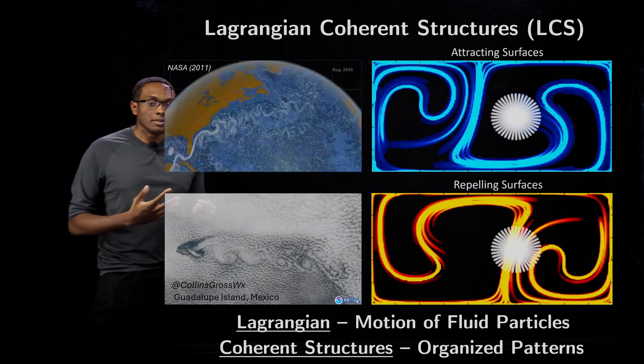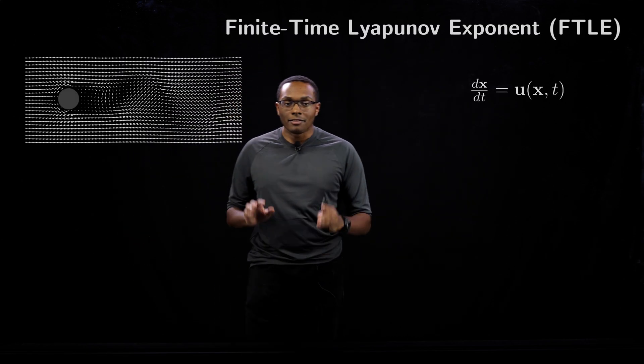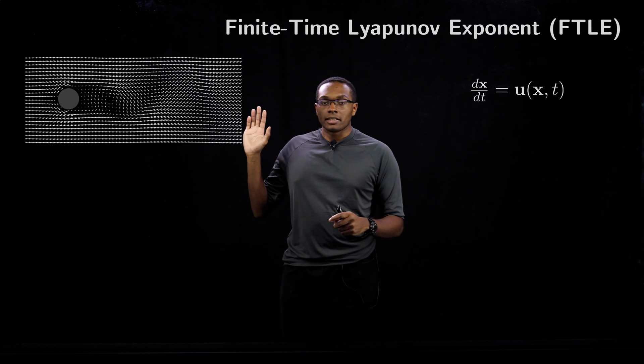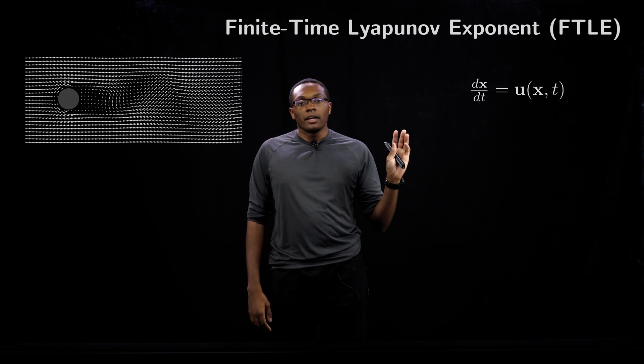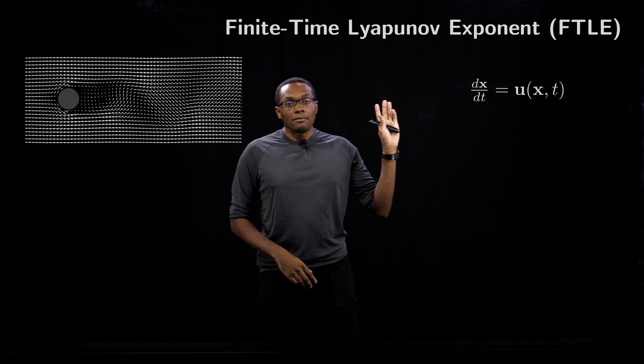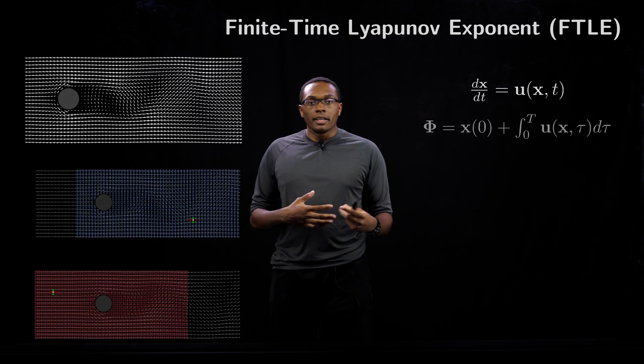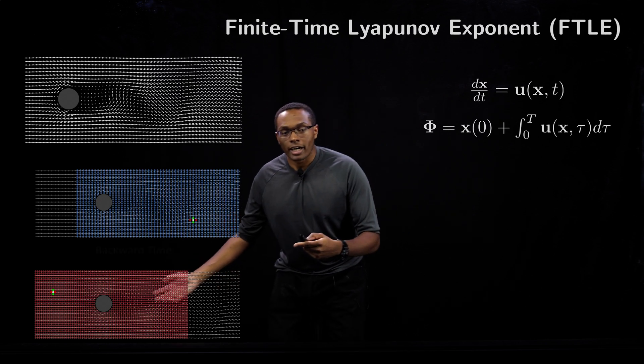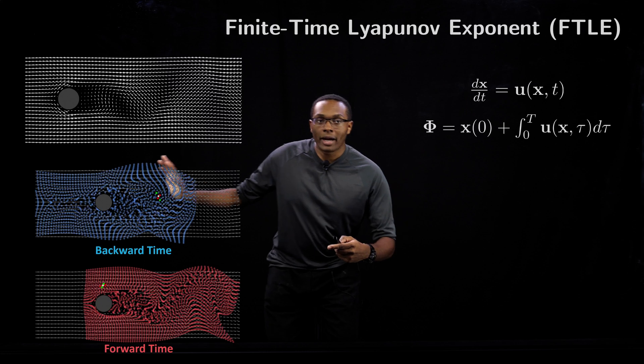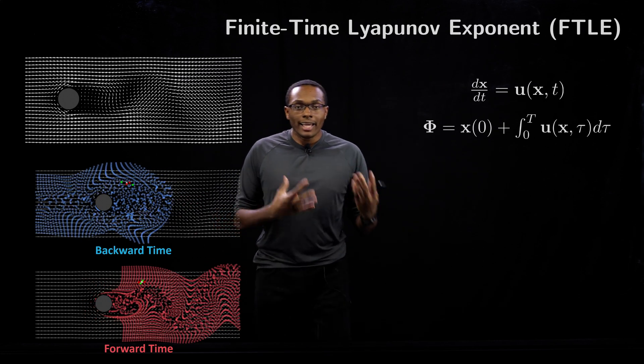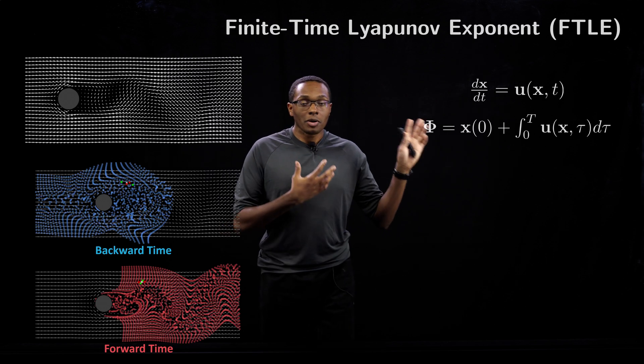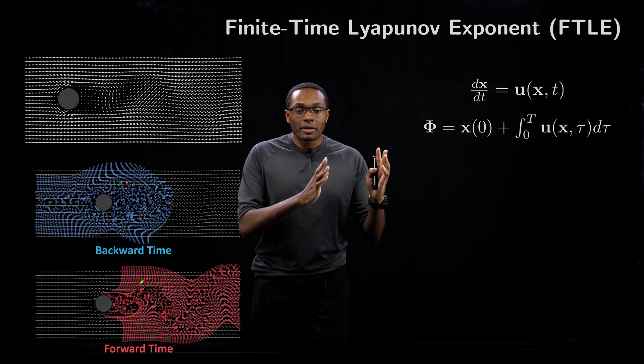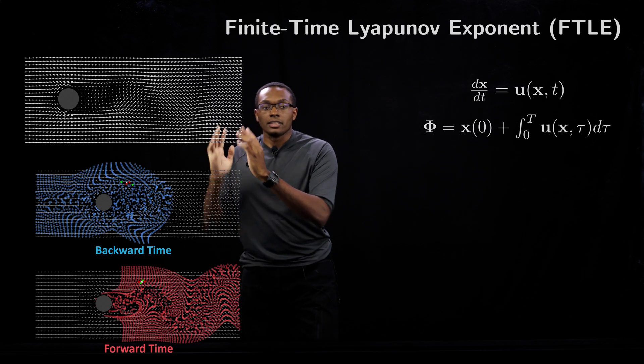We can compute these structures through what we call the finite time Lyapunov exponent or FTLE for short. The first step in computing these is by considering our fluid velocity as a dynamical system which is a function of both space and time. Then we initiate a grid of tracer particles in the flow and integrate these particles either forwards in time or backwards in time. At the end time capital T we get what we call a flow map phi, which characterizes the mapping between particles from the initial position to the end position at time t.